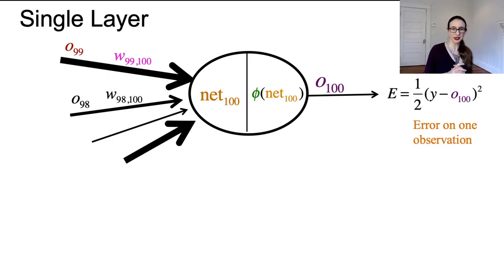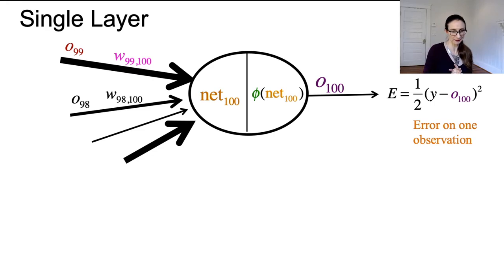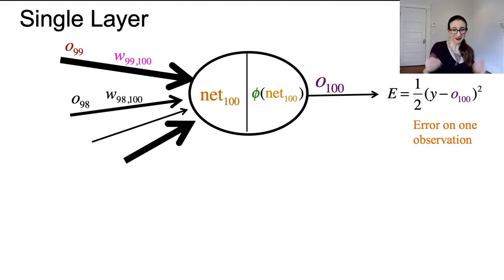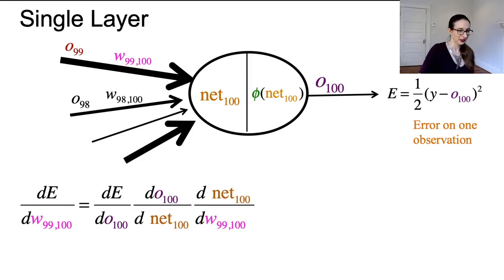To train the neural network, I want to take the derivative of the error with respect to the weights. I want to do gradient descent by calculating the derivatives and taking steps in the negative direction of those derivatives. So we have to calculate all the derivatives. First, the derivative with respect to W99100. We're going to compute the derivatives with respect to all the Ws, starting with all of the ones that go between the 90s layer and the 100s layer. We're going to use the chain rule from calculus.